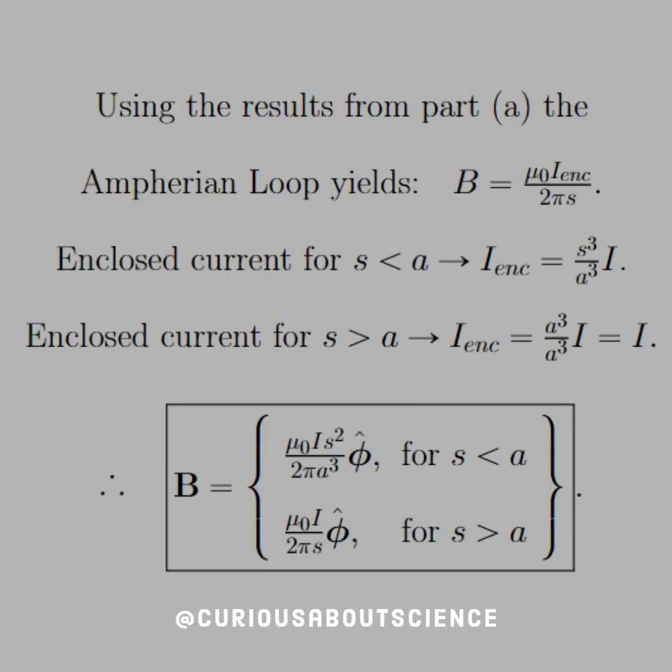So now we need to apply this to what we found from part A with the Amperian loop, which looks to be misspelled. There shouldn't be an H in it. But that told us that B was equal to mu not I enclosed over 2 pi S. However, the enclosed current for S less than A is just what we found. I enclosed is equal to whatever S is that we wish to set the Amperian loop to. The ratio of S to A, both cubed, times I. But the current enclosed for S greater than A just has all the current up to the boundary itself at A. So that's just equal to the total current I.